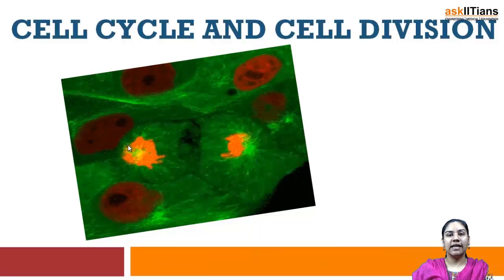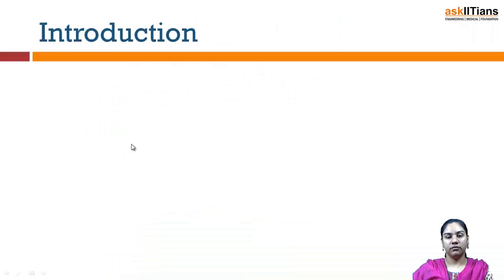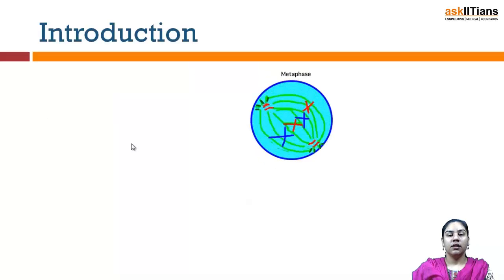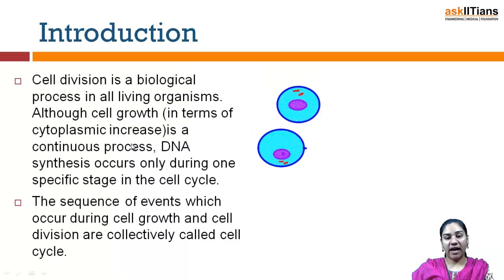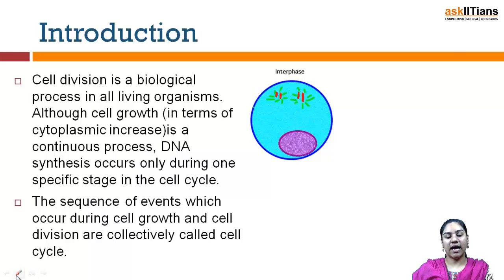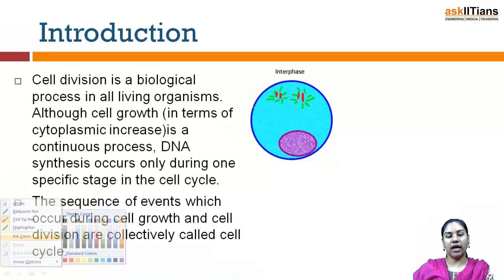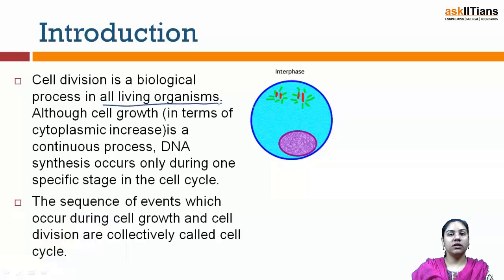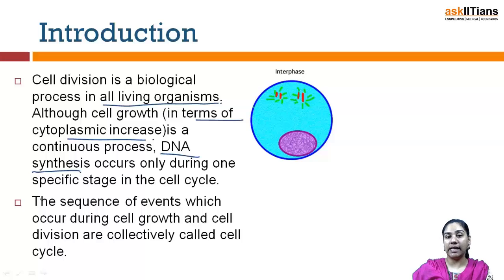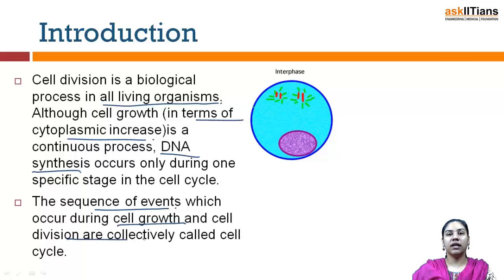Cell division is a biological process that occurs in all living organisms. Although cell growth, in terms of cytoplasmic increase, is a continuous process, DNA synthesis occurs only during one specific stage in the cell cycle. The sequence of events which occur during cell growth and cell division are collectively called the cell cycle.